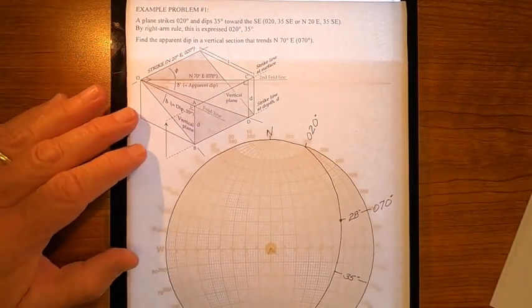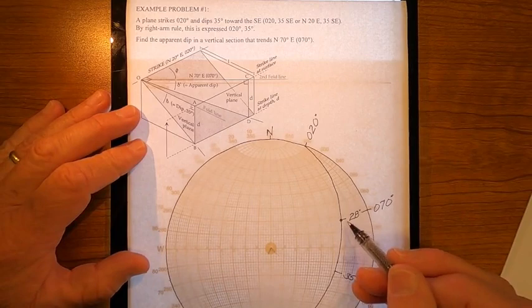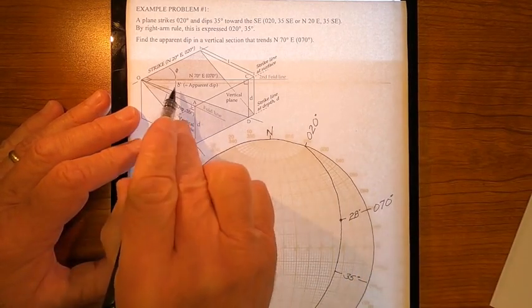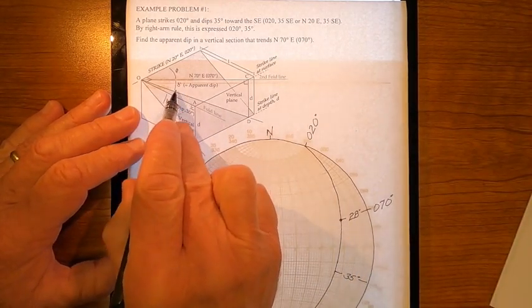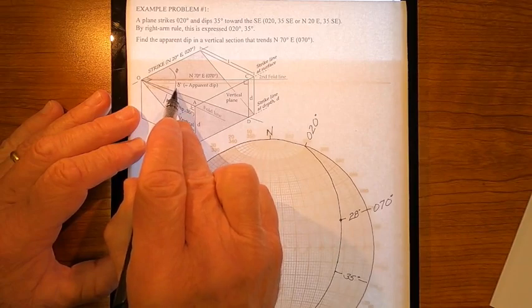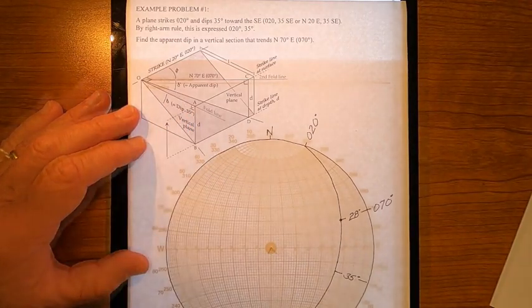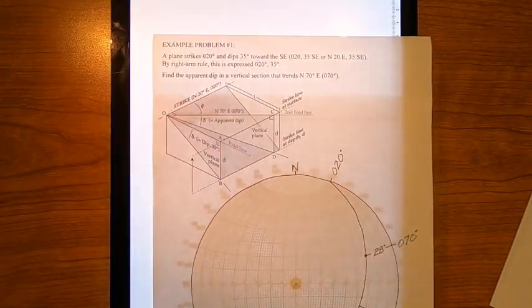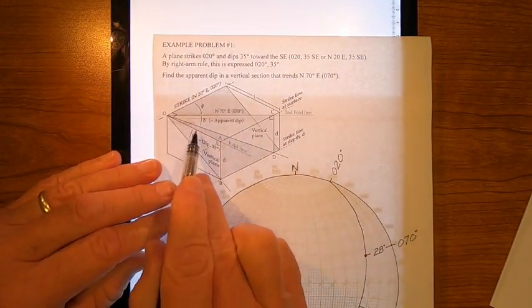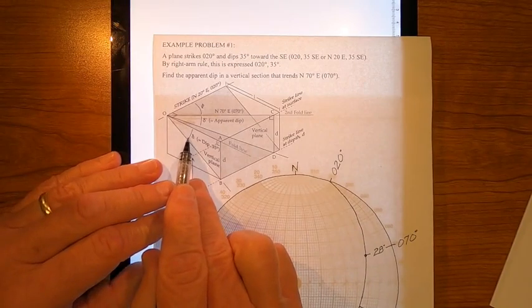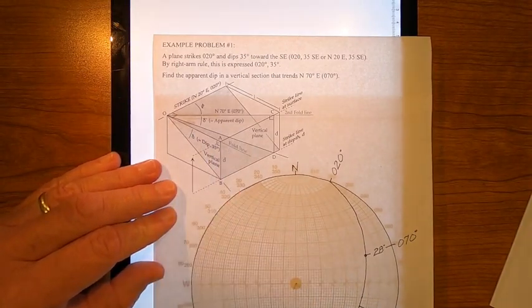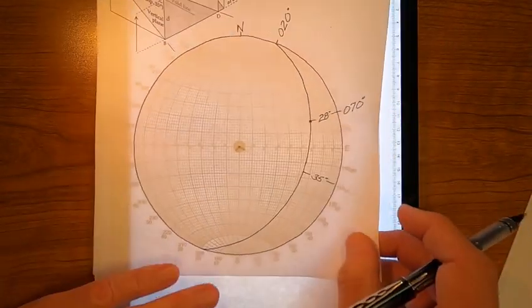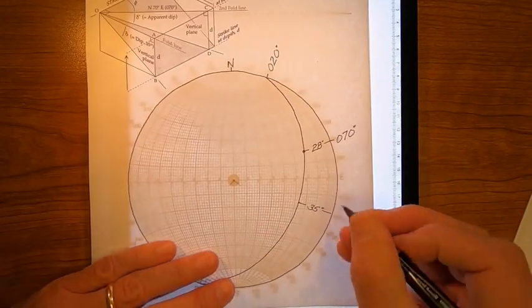Let's see. Can I show enough of it? So, this angle right here, 28 degrees, is that angle right there, the apparent dip. This angle, 35 degrees, is this angle right here, the actual dip in the dip direction. And this, then, of course, is the dip direction.